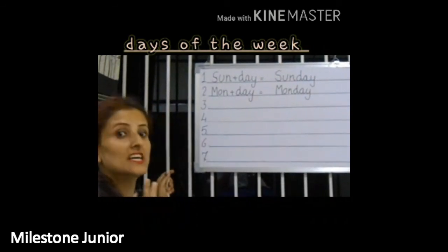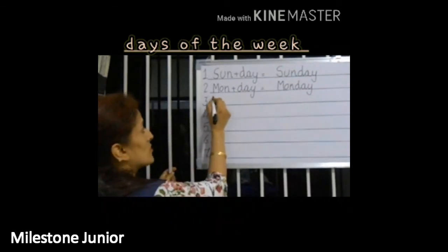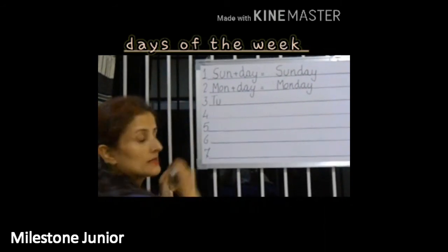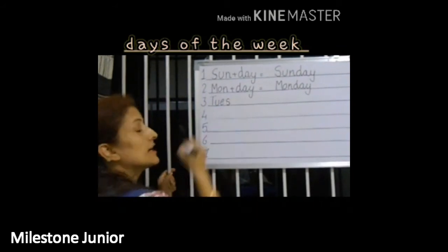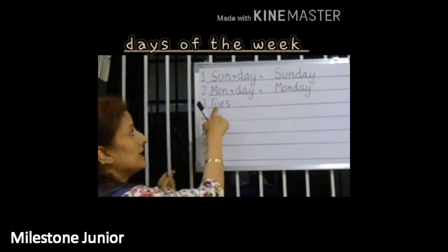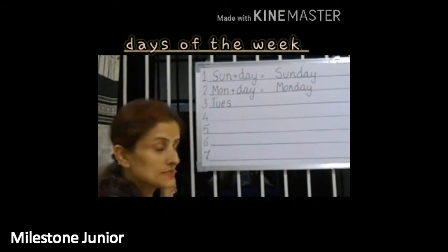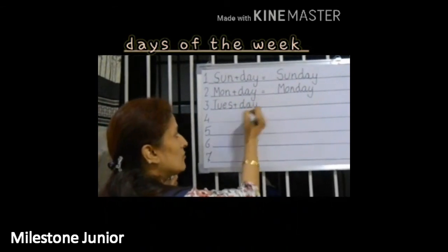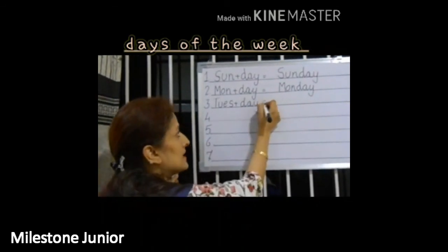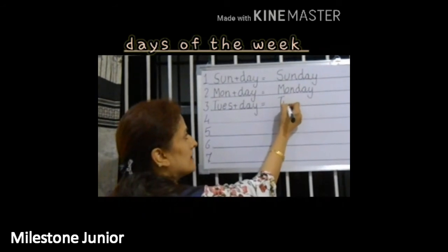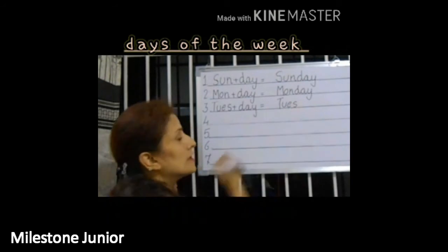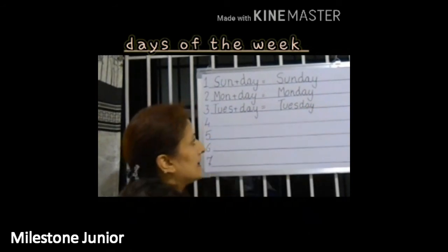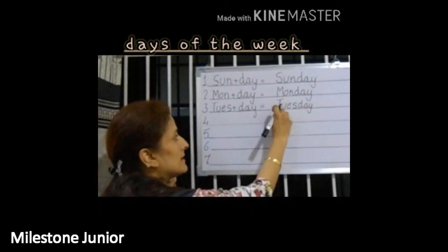Now, third is Tuesday. First we will write Tues: T-U-E-S — Tues. And Day: D-A-Y — Day. That is Tuesday. T-U-E-S-D-A-Y. Tues Day. Tuesday.